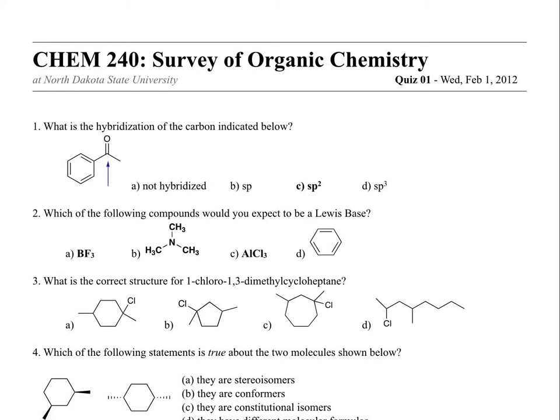Let's take a look at the quiz. For the first question, it was about hybridization. I think there's still some confusion about how to tell what the hybridization state of an atom in a molecule is. I've indicated here the carbon attached to the oxygen, double bonded to the oxygen. In multiple choice there are four different options. Obviously the first one couldn't be possible — it has to be hybridized if it's bonded in a molecule. When we think about hybridization of atoms bonding within molecules, why would they hybridize, why would they change from the atomic structure?